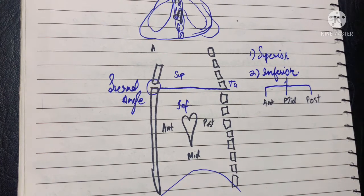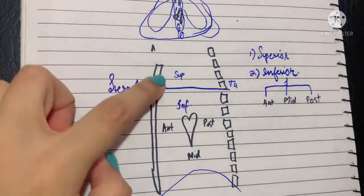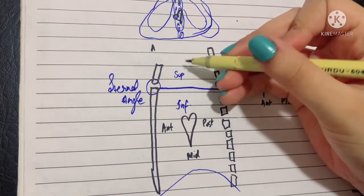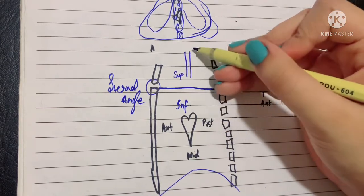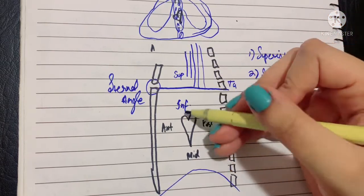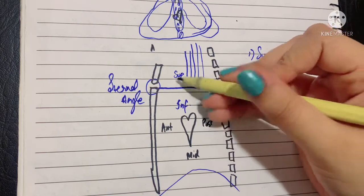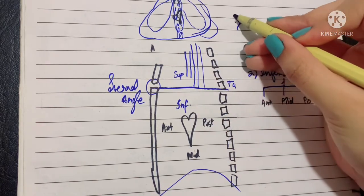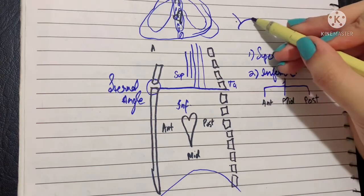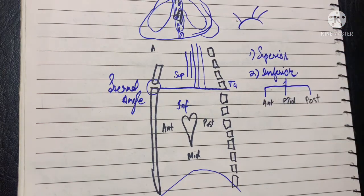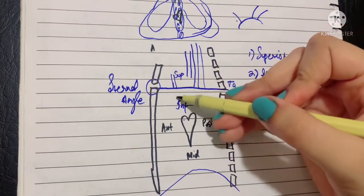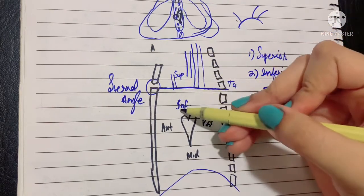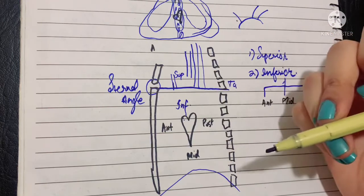The important part of the mediastinum is the contents lying in each subdivision. The contents of the superior mediastinum are mostly structures entering and exiting through the thoracic aperture: the trachea, esophagus, thoracic duct, and arteries including branches of the arch of aorta — specifically the right brachiocephalic trunk on the right side, and the left common carotid and left subclavian artery on the left. Veins include the superior vena cava, specifically its superior half.